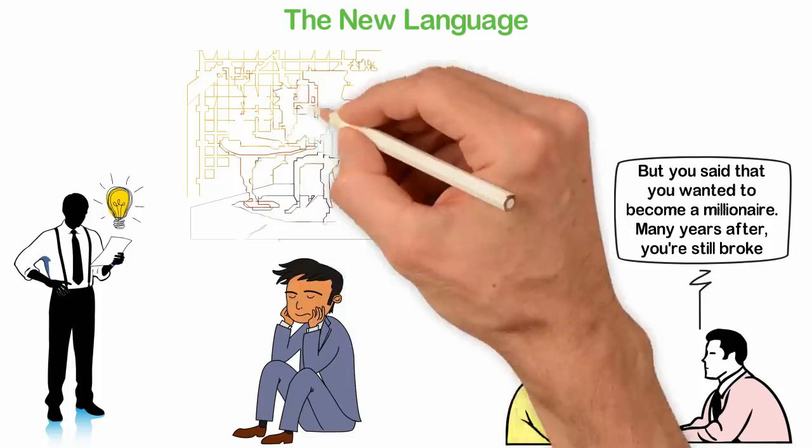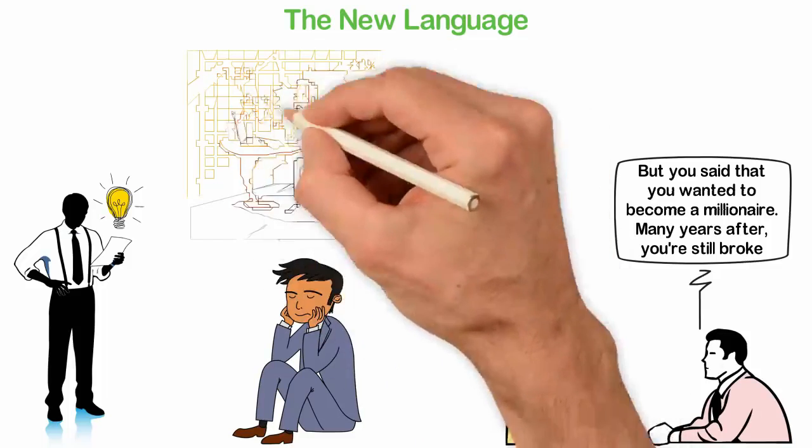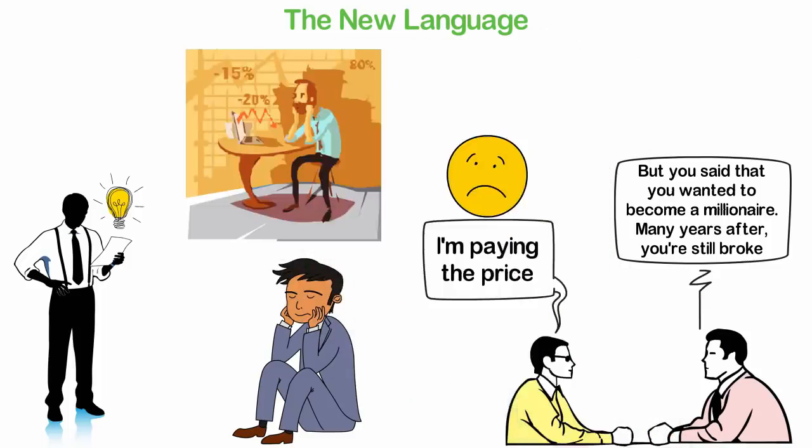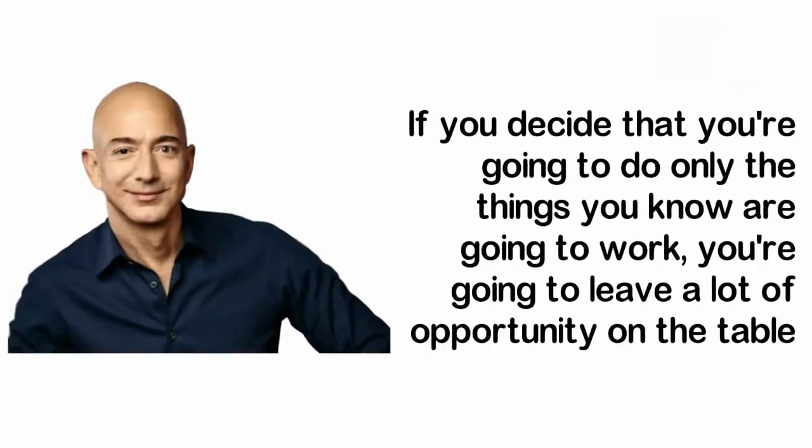When you think about achieving success, think about learning a new language and this will help you to see mistakes as a normal thing. If you decide that you're going to do only the things you know are going to work, you're going to leave a lot of opportunity on the table.